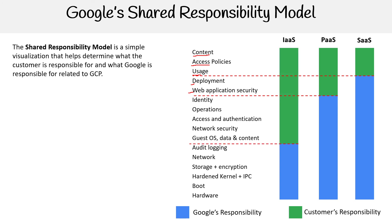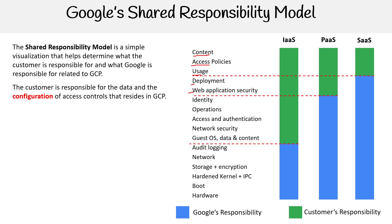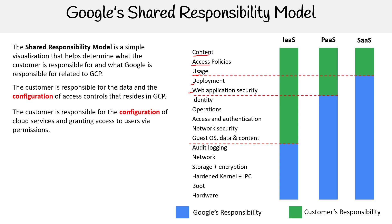There's also infrastructure as a service — these are the basic building blocks. The idea here is you can launch a virtual machine, and if you do that, then you are responsible for the guest OS — you're actually adjusting OS layer stuff. Everything underneath is Google's responsibility. So the customer is responsible for the data and the configuration of access controls that reside in GCP, and the customer is responsible for the configuration of cloud services and granting access via permissions.